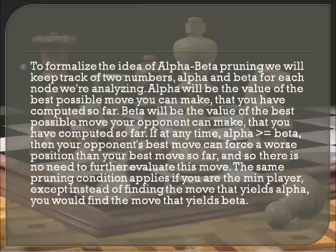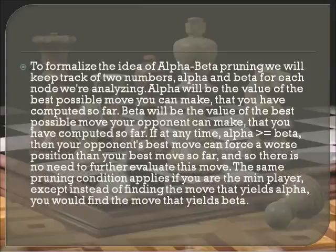Alpha will be the value of the best possible move you can make that you have computed so far. Beta will be the value of the best possible move your opponent can make that you have computed so far. If at any time Alpha is greater than or equal to Beta, then your opponent's best move can force a worse position than your best move so far, and so there is no need to further evaluate this move. The same pruning condition applies if you are the Min player, except instead of finding the move that yields Alpha, you find the move that yields Beta. Here is an example of the Alpha-Beta pruning.